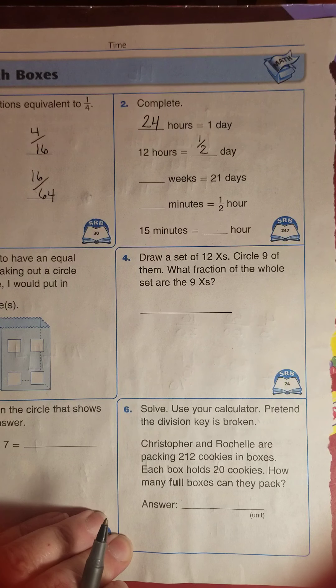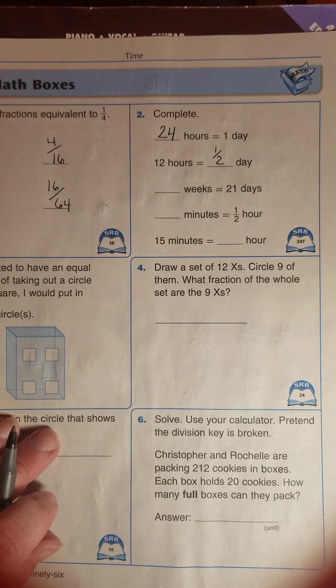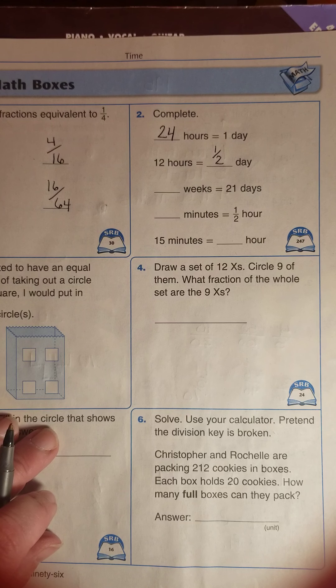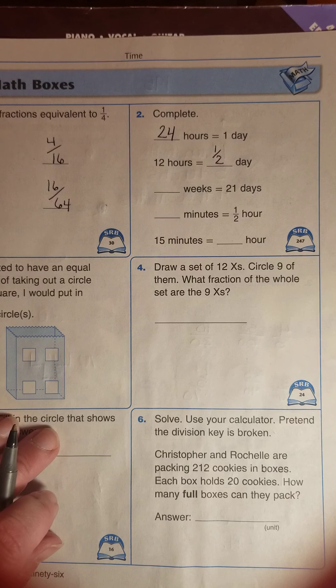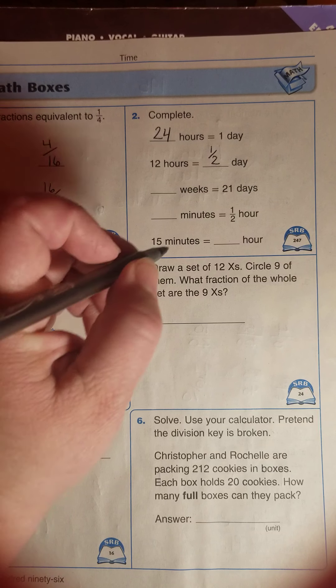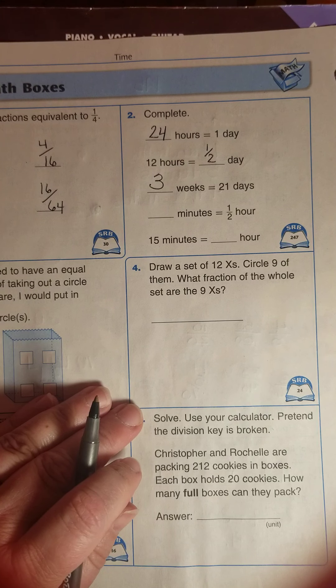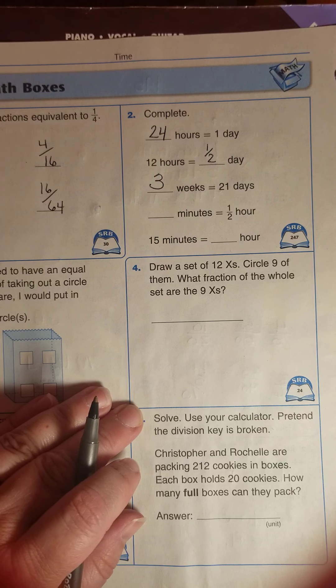How many weeks would we have if we had twenty-one days? Let's think about what we know about weeks. How many days are in one week? That's right, there are seven days in a week: Sunday, Monday, Tuesday, Wednesday, Thursday, Friday, and Saturday. Seven days. If I had twenty-one days, that's seven days in one week, fourteen days in two weeks, and seven times three is twenty-one. So if I have twenty-one days, I have three weeks.